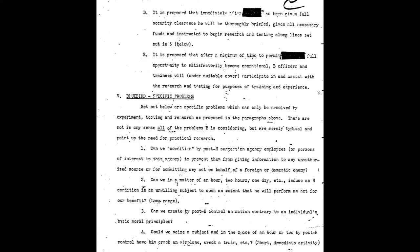Bluebird's specific problems — these are set out below and can only be resolved by experiment, testing, and research. They are not all of the problems Bluebird is considering, but are merely typical and point up the need for practical research. Problem 1: Can we condition, by post-hypnotic suggestion, agency employees or persons of interest to prevent them from giving information to any unauthorized source or committing any act on behalf of a foreign or domestic enemy?